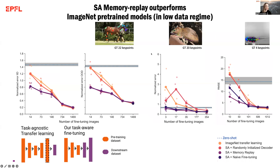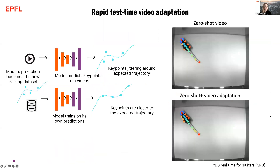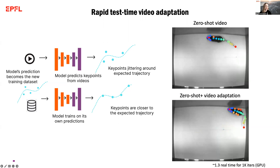These super animal models with memory replay are now outperforming ImageNet pre-trained on four major datasets — both the in-domain and out-of-domain HORSE10 benchmark showing zero-shot performance. Even with just 14 frames of data we're getting impressive gains over ImageNet. This is also true in our newly introduced iRodents dataset — zero-shot is already very good, and with just three to seventeen images you can boost performance further. This represents about a 10x data efficiency improvement. We also show zero-shot video adaptation, making jittery tracking smooth by fine-tuning on the video at hand.